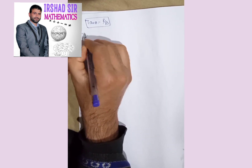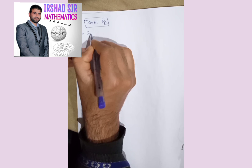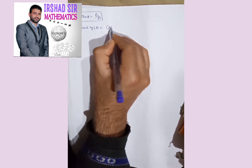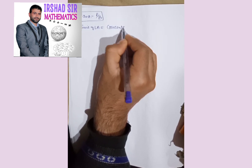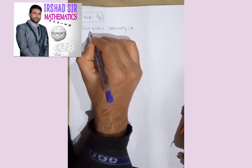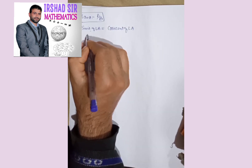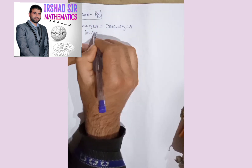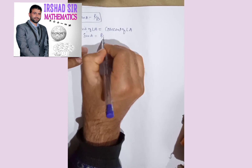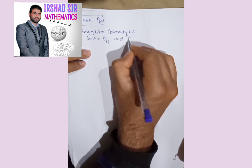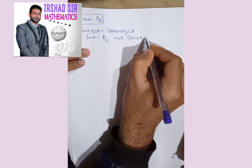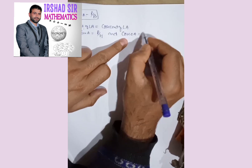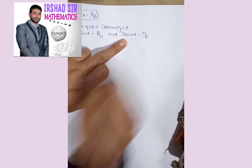These are the three main ratios. Now we have the reciprocals of these three ratios. The reciprocal of sine of angle A is cosecant of angle A, abbreviated as cosec A. If sin A is perpendicular by hypotenuse, then cosec A is hypotenuse by perpendicular.